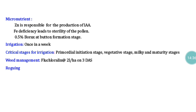Boron deficiency creates problems with pollen setting and seed formation, so apply 0.5% borax during the flower formation stage. Irrigation should be given once a week; critical stages for irrigation are primordial initiation, flowering, milky, and maturity stages. For weed management, trifluralin at 2 liters per hectare as a pre-emergence herbicide is recommended. Roguing is a very important operation in sunflower seed production and should be done based on the crop's growth stages.